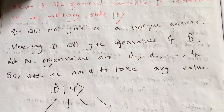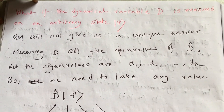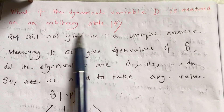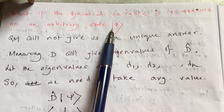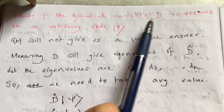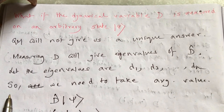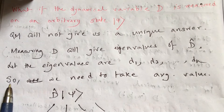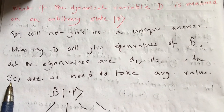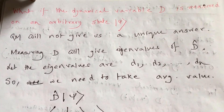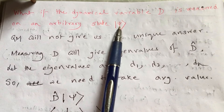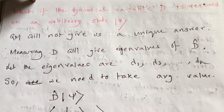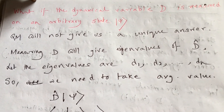Then what do we get? For this general, arbitrary state ψ which is not an eigenstate of this dynamical variable d, measurement will not give us any unique answer in quantum mechanics. If I am measuring d on this state, I won't get just one and only answer — I'll get so many answers.